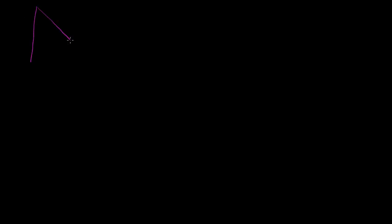We already know that the sum of the interior angles of a triangle add up to 180 degrees. So if the measure of this angle is A, the measure of this angle over here is B, and the measure of this angle is C, we know that A plus B plus C is equal to 180 degrees.